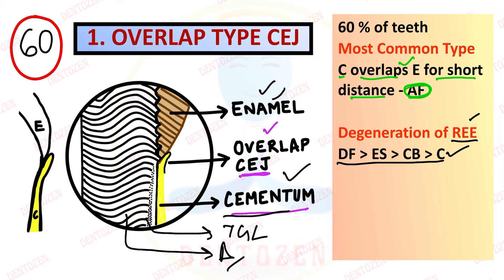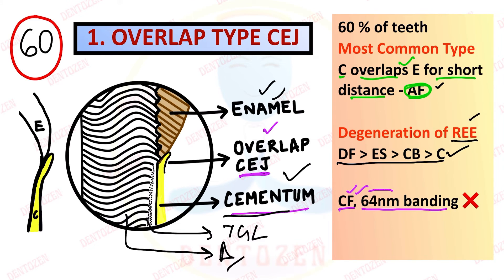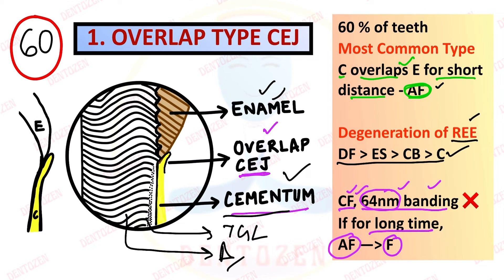Normally this cementum is called afibrillar, but actually collagen fibrils are present - they just do not show the normal 64 nanometer banding. However, with time, if this afibrillar cementum persists for a long time, it can get converted into fibrillar cementum with normal collagen fibril banding.